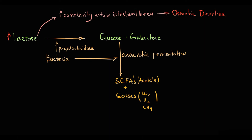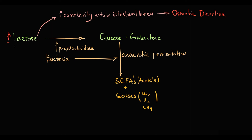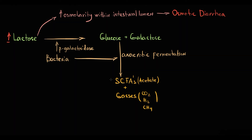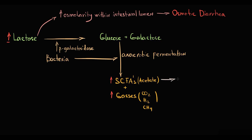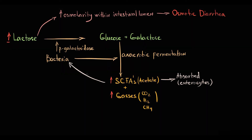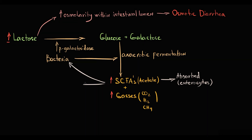These are the end metabolites of bacterial fermentation of lactose. Because the amount of lactose is high, bacterial fermentation results in massive production and accumulation of short-chain fatty acids and gases in the intestinal lumen. Most short-chain fatty acids are removed from the colon through absorption by colonocytes. Another portion is used by bacteria as an energy source, and some are excreted in feces.